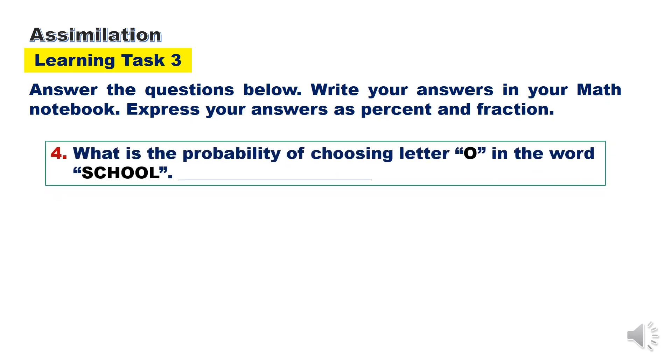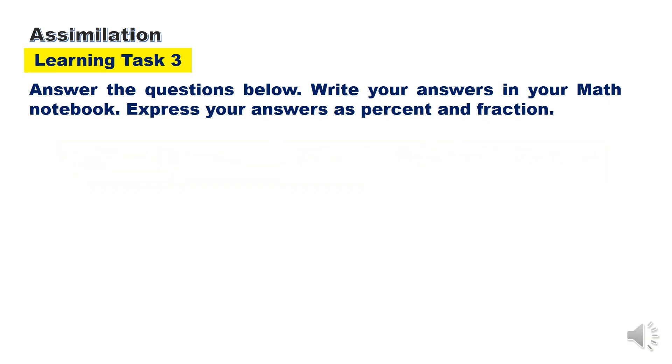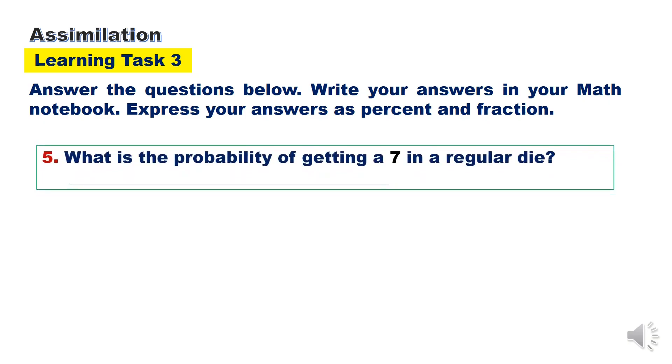How about number 4: What is the probability of choosing letter O in the word school? Number 5: What is the probability of getting a 7 in a regular die?